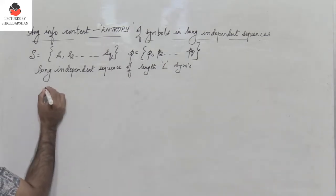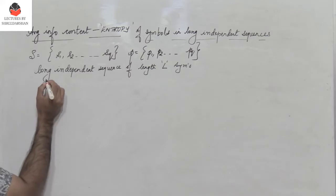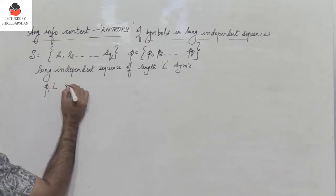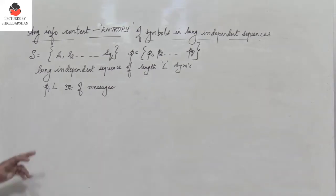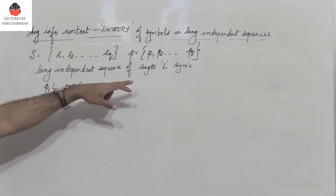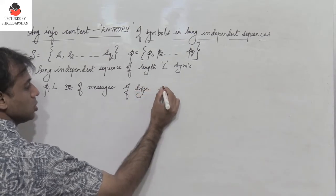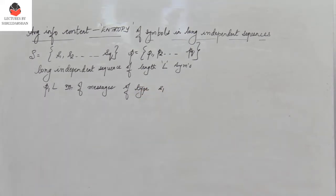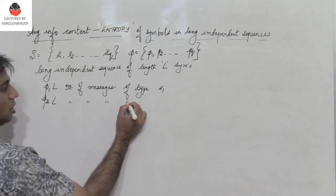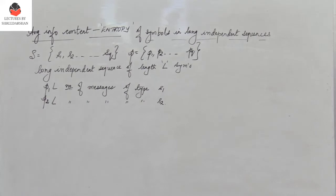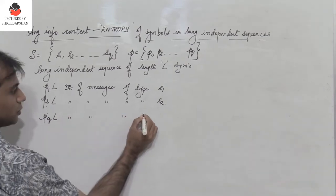If I multiply P1 — the probability of occurrence of symbol S1 — by L, I get P1×L number of messages of type S1. Similarly, P2×L gives the number of messages of type S2, and so on.